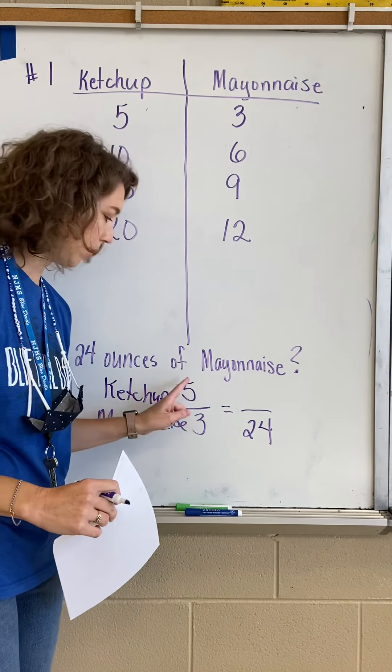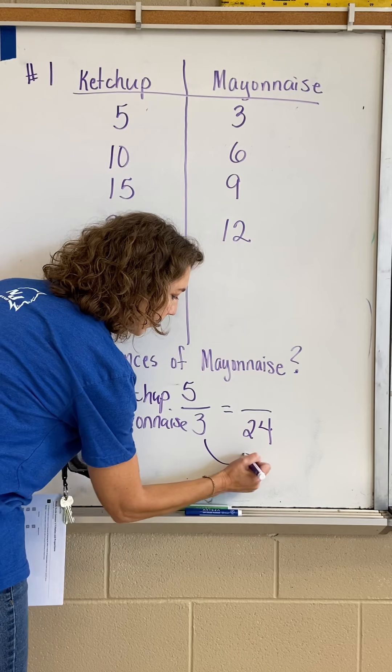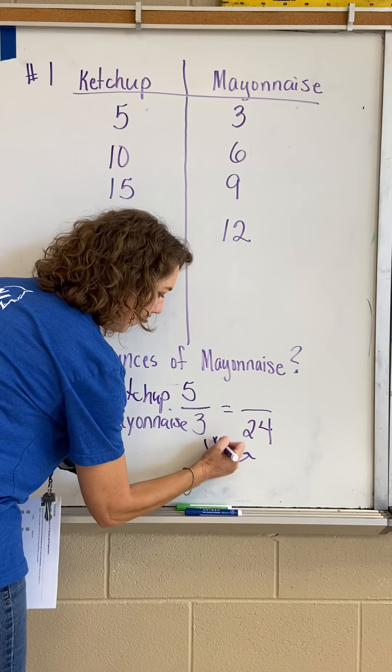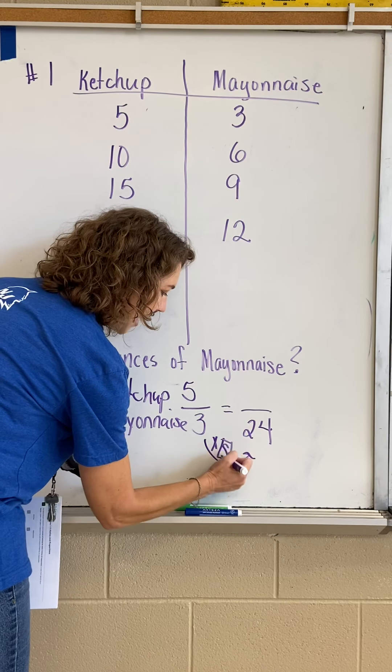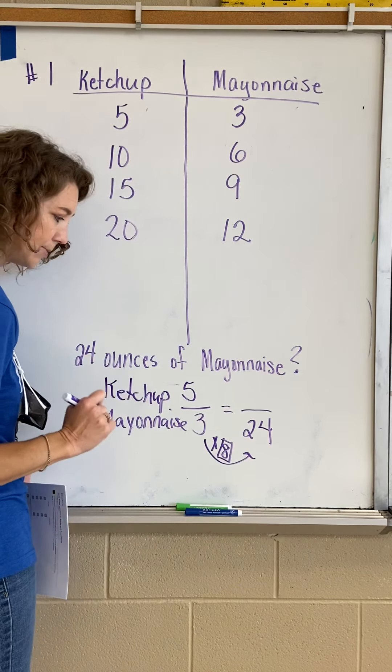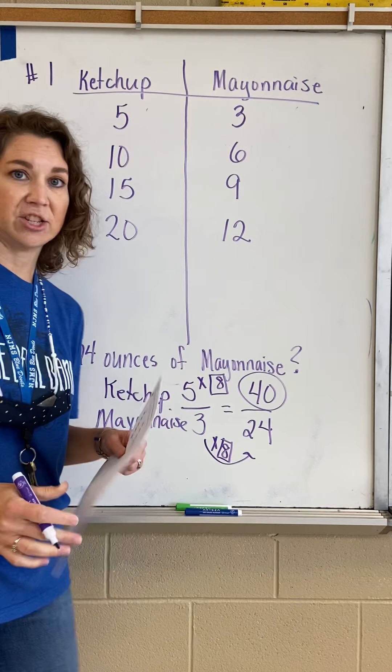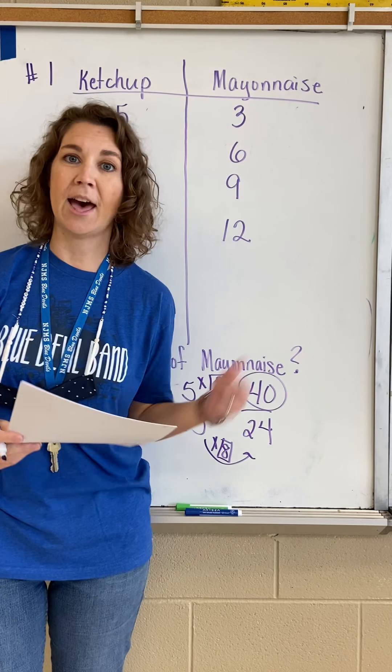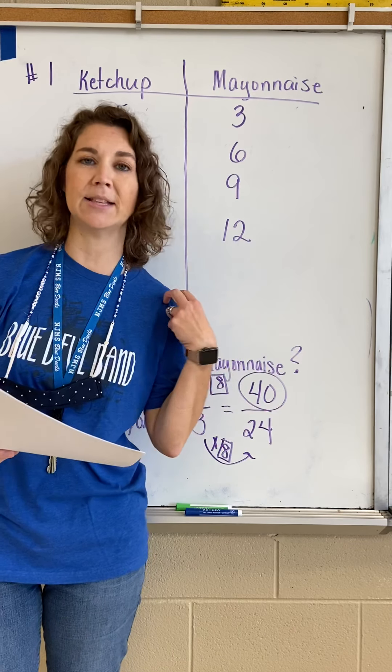Two equivalent ratios create a proportion. How do I get from three to 24? I multiply three times eight, and that gives me 24. Whatever you do to the bottom, you must do to the top. Five times eight is 40. That means I need 40 ounces of ketchup to make it taste the same.